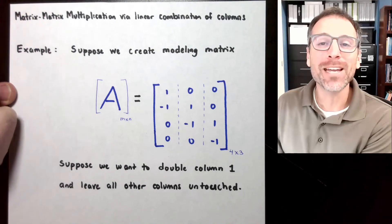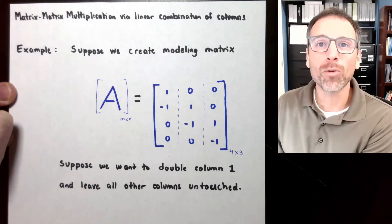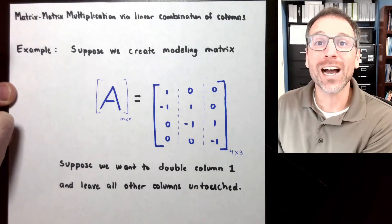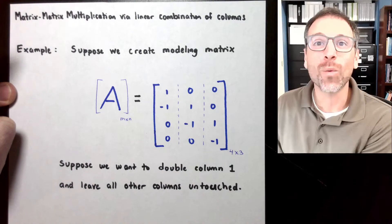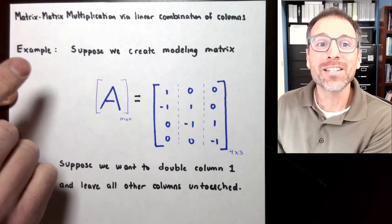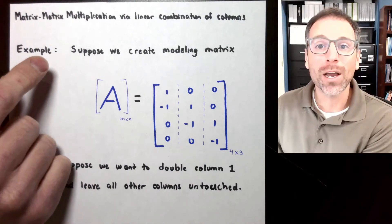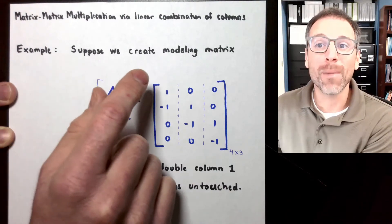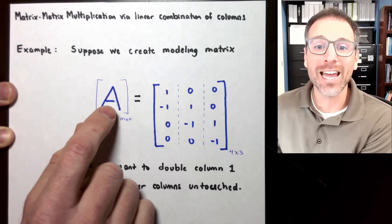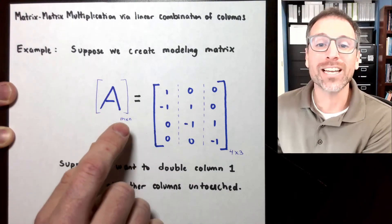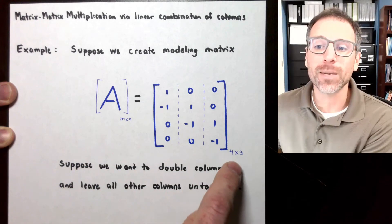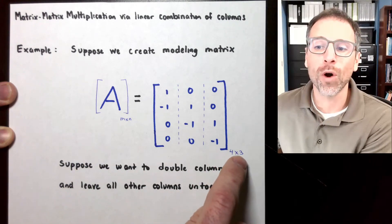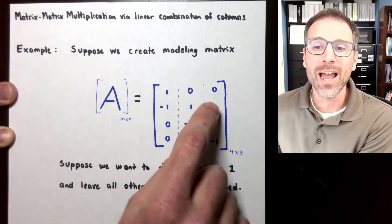Let's take a look at how we can use matrix-matrix multiplication via a linear combination of column vectors in the wild. This is Example 1, where we create a modeling matrix A. In general, it's an M by N. For this example, it's going to be a 4 by 3.